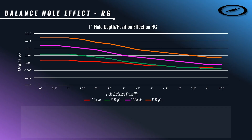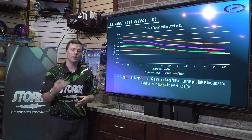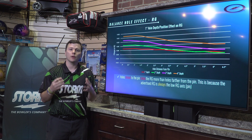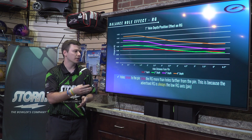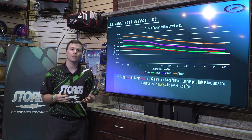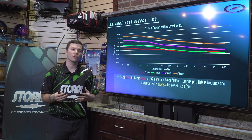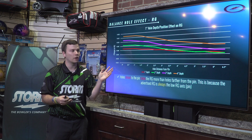The first trend you're going to notice is that holes closer to the pin raise the RG more than holes further away from the pin. This should make sense — anywhere we put a hole in a bowling ball, the RG is going to be raised on the axis that the hole is on. Since the pin is always the lowest RG axis on the ball, when we're closer to it we're raising the overall RG more than anywhere else on the entire surface of the ball.